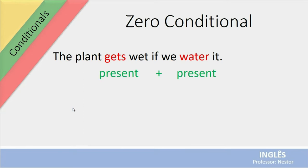Dá uma olhada aqui na estrutura. The plant gets wet. Então, ela fica molhada. Eu tenho present. If we water it. E aí, eu tenho present também. Water é água, mas pode ser o verbo aguar.